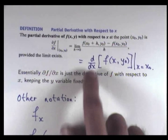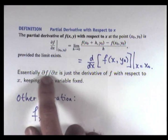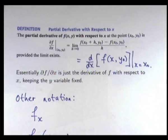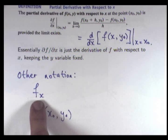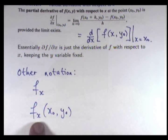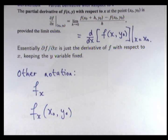This notation is also used: dF/dx is just the derivative of f with respect to x keeping the y variable fixed. There are a number of different notations for partial derivatives. Some people prefer to use the subscript, so f sub x means dF/dx with curly d's. And f sub x evaluated at a point is just the partial derivative of f with respect to x at a given point, x₀, y₀.